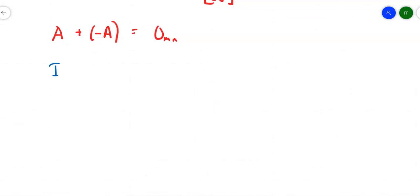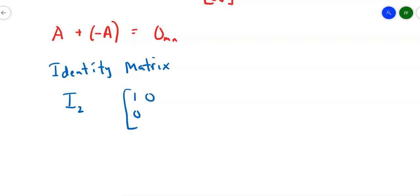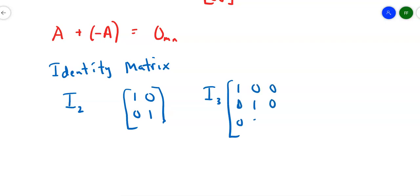The identity matrix is also interesting. Multiplying a matrix by the identity matrix of the same size returns the original matrix. The 2 by 2 identity matrix has ones running down the diagonal and zeros everywhere else. The 3 by 3 identity matrix similarly has ones on the diagonal and zeros everywhere else. It's a square matrix such that the identity times A equals A times the identity, and it returns the original matrix.